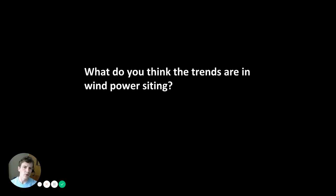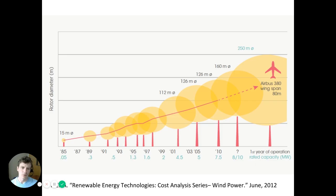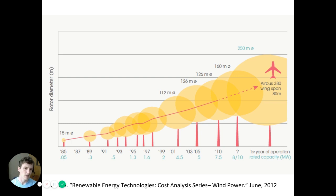Given all of this, what are the trends in wind power siting? First, we are building wind turbines larger and larger. Power output is directly proportional to rotor swept area. A lot of the costs of wind development — siting, foundation, connecting to a substation, transmission — don't scale directly with turbine size. So if you're going to build a turbine, you might as well build a bigger one, since the extra cost may not be much more but you'd get significantly more electricity.